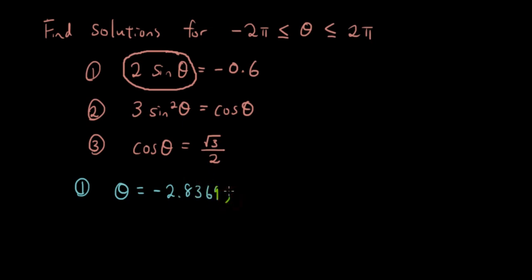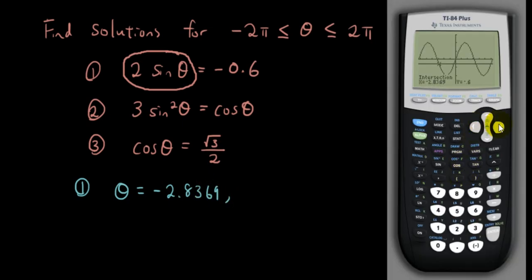Okay, that's the first answer, and let's go to the second answer which is about here. Intersects, first curve, second curve, guess. So the second answer is negative 0.304.